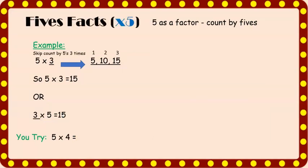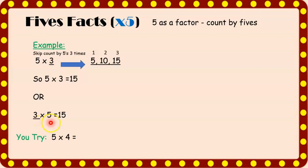Next up: five facts. When five is a factor, simply count by fives. For example, we have five times three. So I will count by five three times: five, ten, fifteen. I end up stopping at fifteen, so the product of five and three is fifteen. I can write it two ways: five times three equals fifteen, or three times five equals fifteen — again, an example of the commutative property.